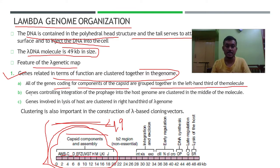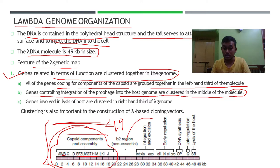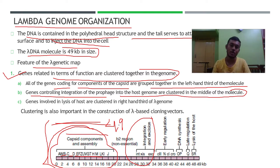The second region contains genes controlling the integration of the prophage into the host genome, clustered in the middle of the molecule. This includes integration and excision — excision being the removal or cutting of that particular part of a DNA strand. So the middle region handles prophage integration.